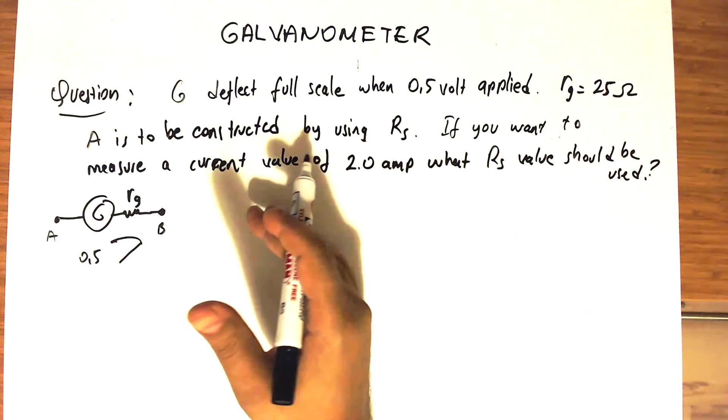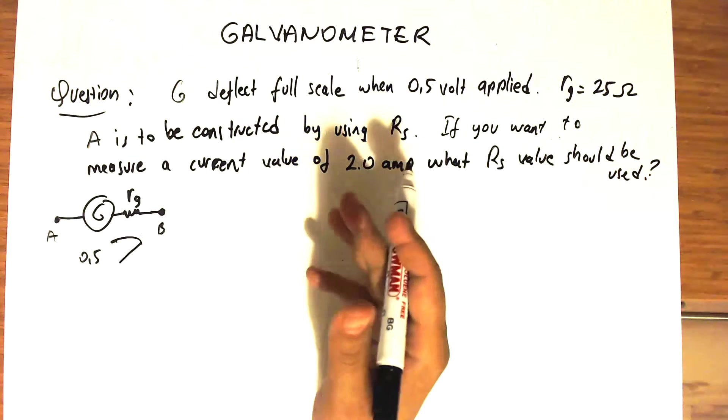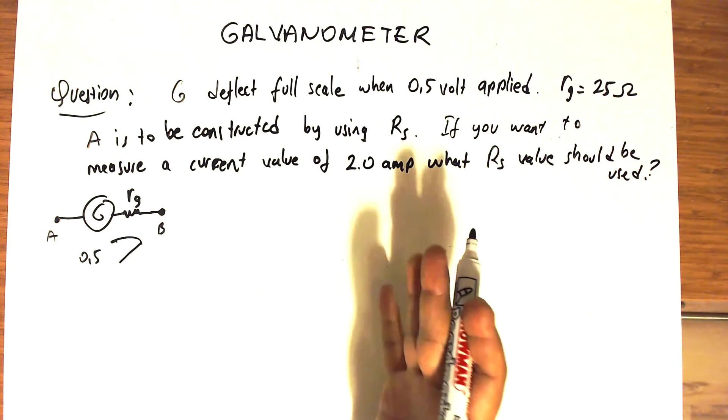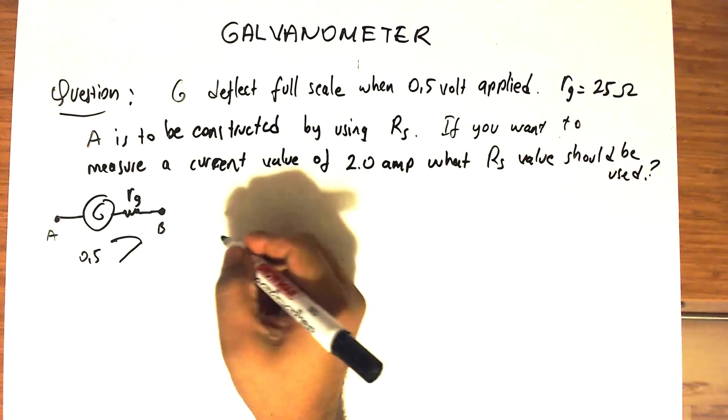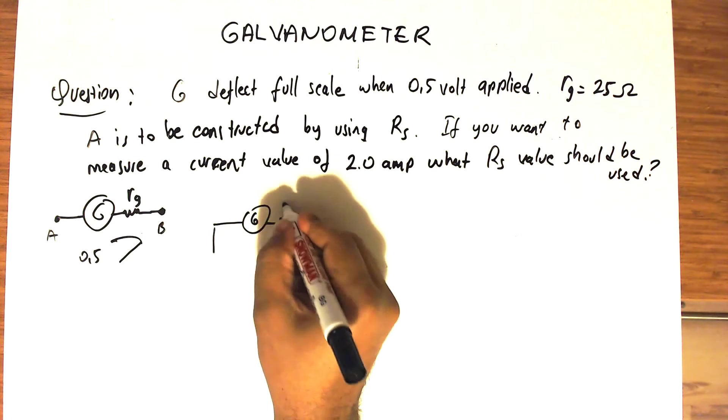If you want to measure currents up to 1.5 amperes or 2 amperes, and the maximum current you come across is two amperes, then what shunt resistance should be used? Remember, this is the setup to use the galvanometer.